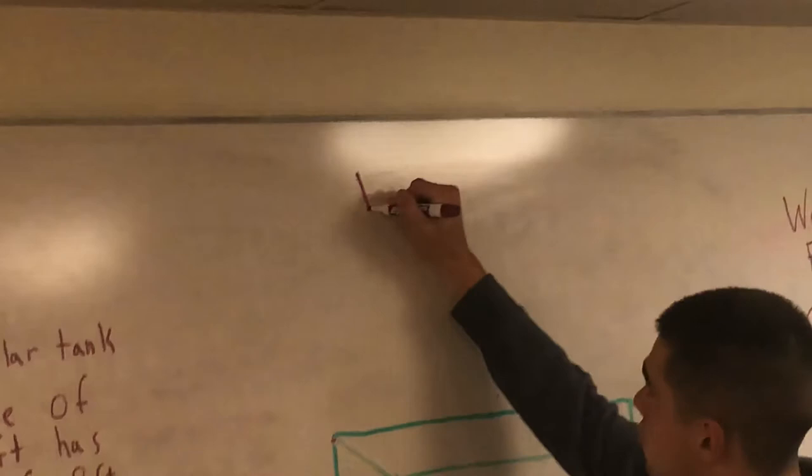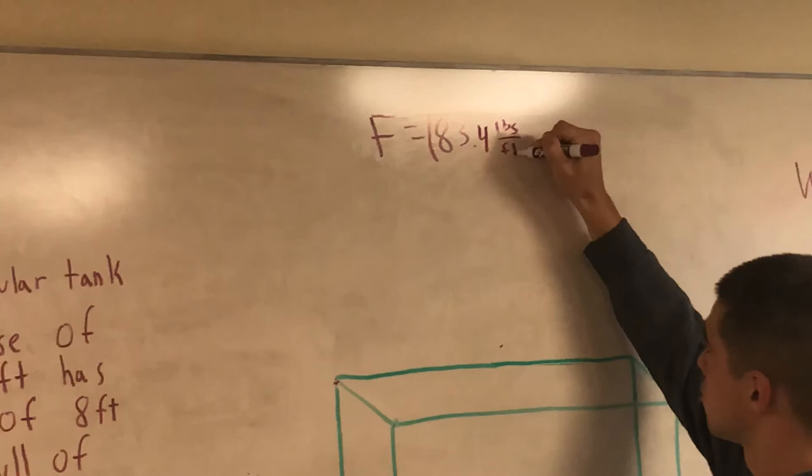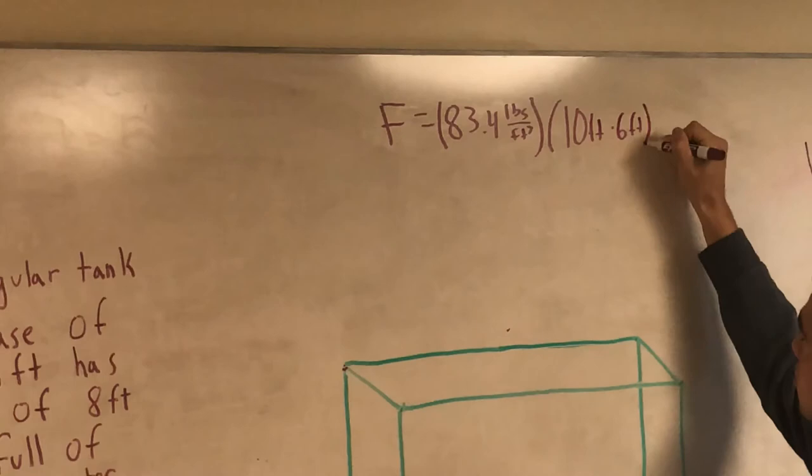Alright, so force equals the water weight, which is 83.4 pounds over feet cubed, multiplied by your volume, which is 10 feet, multiplied by 6 feet, multiplied by dx.